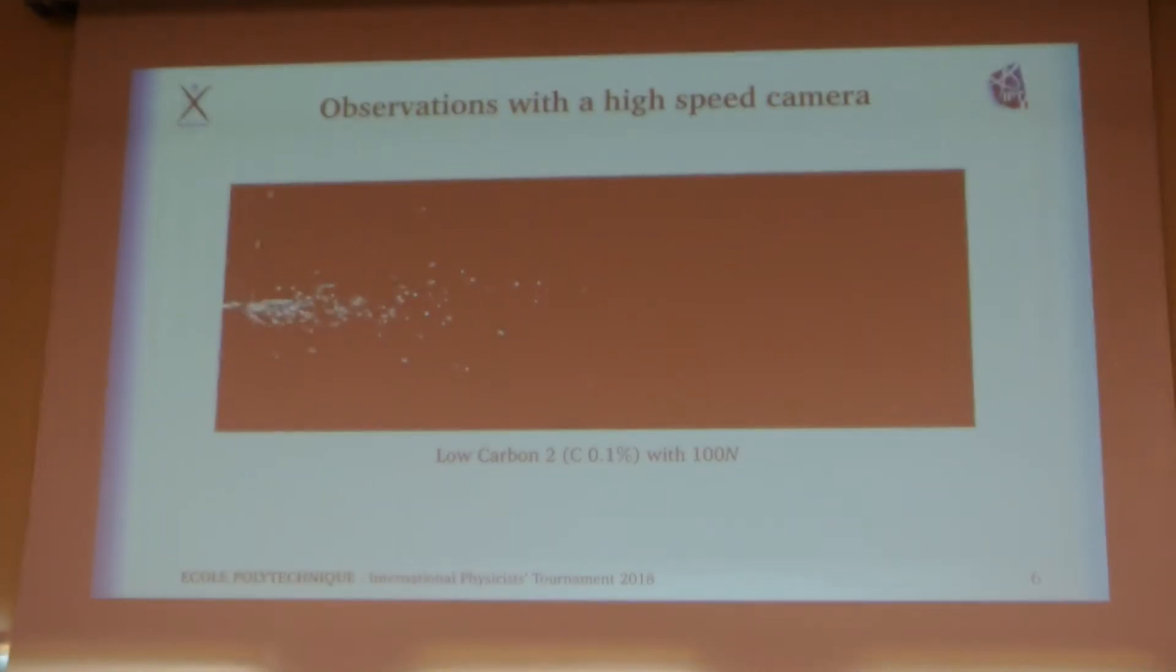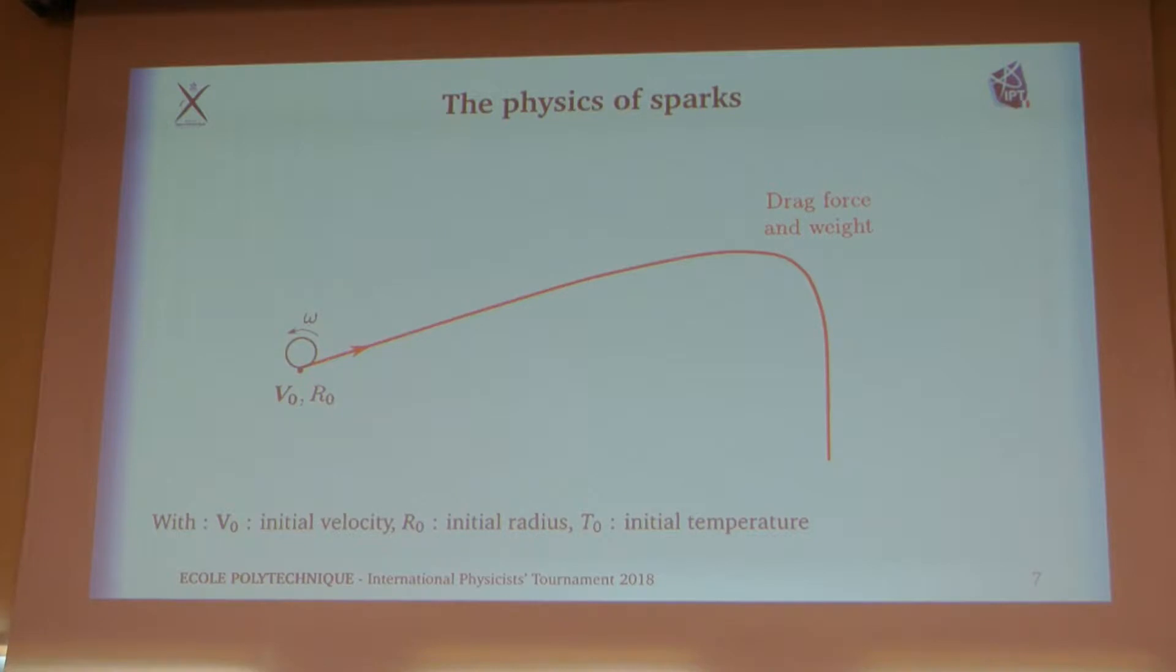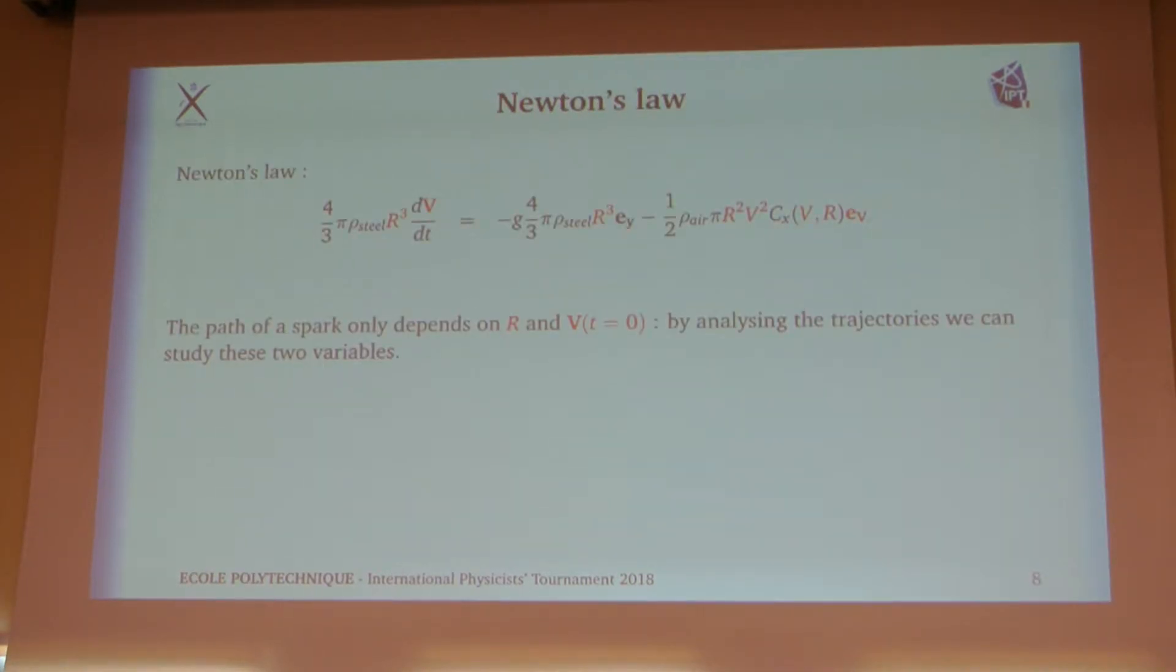This is the kind of video we can obtain with low carbon steel. We can see much explosions for now but there is enough physics to discuss for a few minutes before tackling explosions. The first thing we can see on the video is basically the trajectory of sparks. Let's talk about the two different forces that act on them: the drag and the weight. It is quite easy to write Newton's law for the trajectory of sparks. By doing that, we can see that the whole trajectory only depends on two parameters: the radius and initial velocity of the sparks. If we track the trajectories, we can assess these two variables by fitting the solution of this equation.